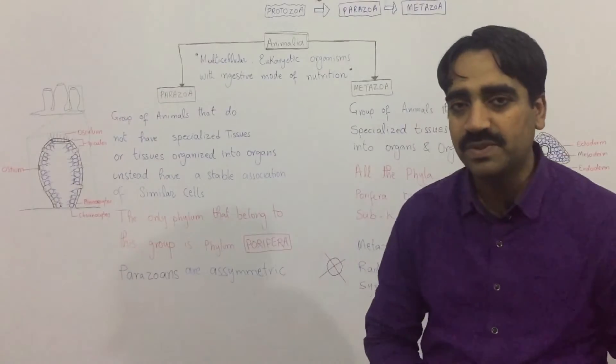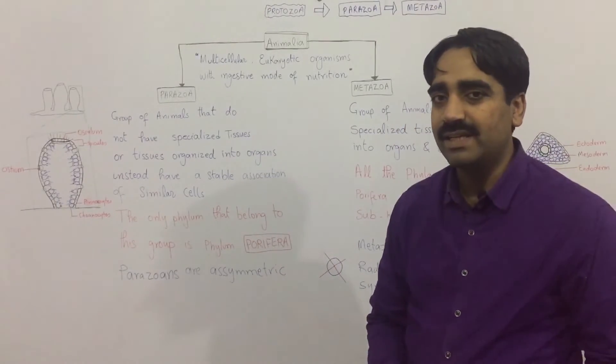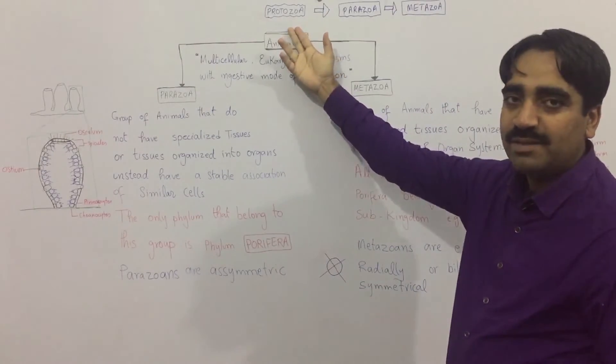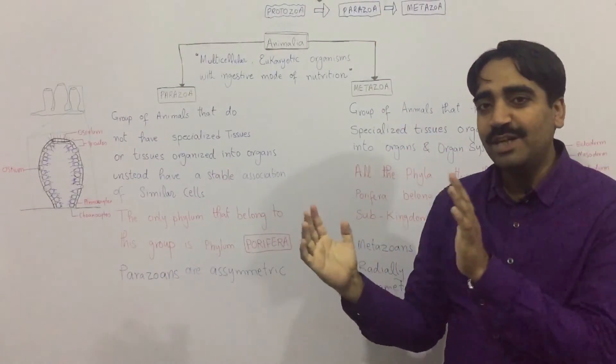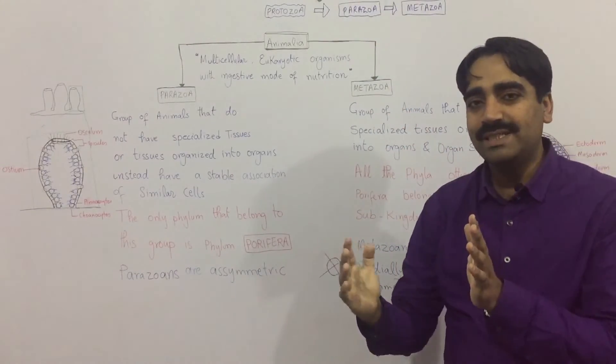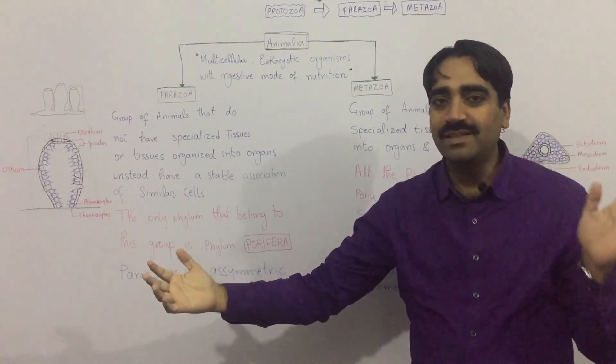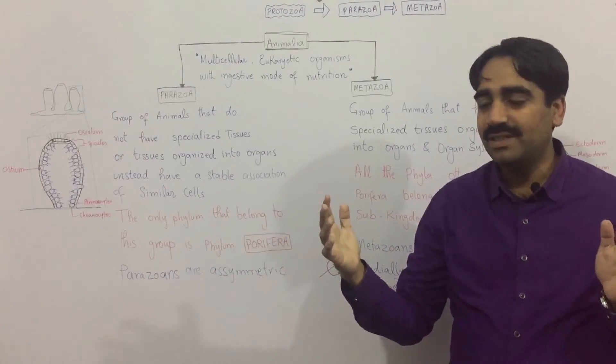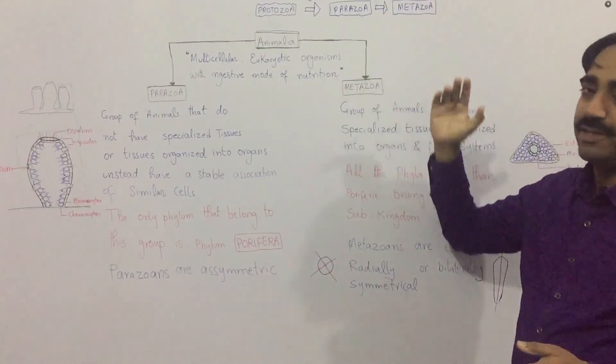These are the two groups. If you talk about the evolutionary sequence, let's see again: the protozoa are the ancestors of the animals; the parazoa are the transition group of animals that links the ancestral protozoa with the multicellular, well-organized, eukaryotic group of animals—that is the metazoa.